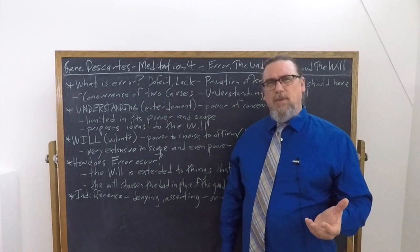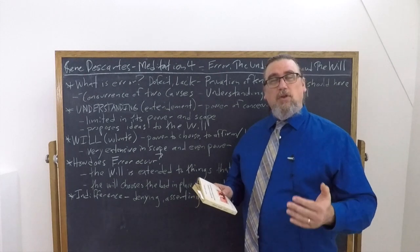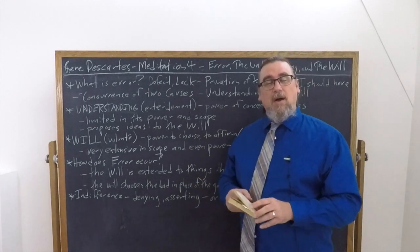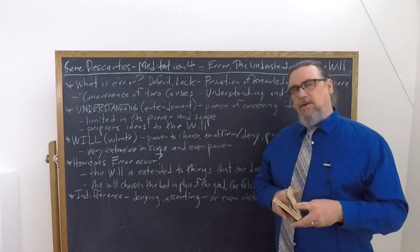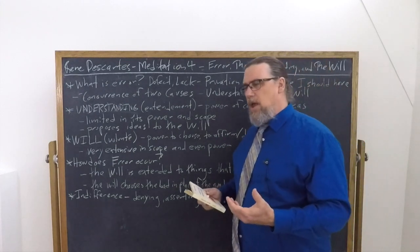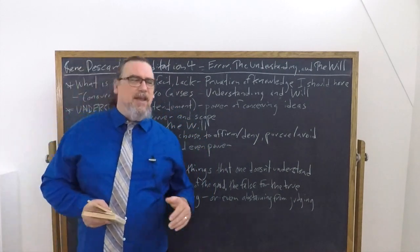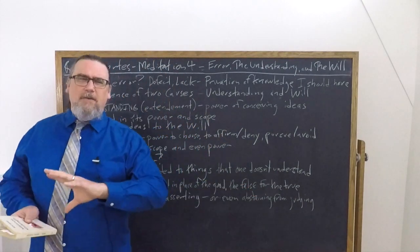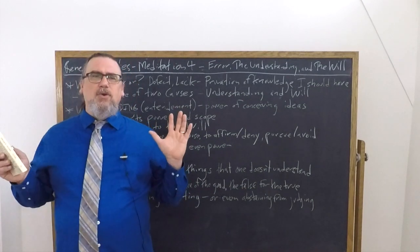So this actually suggests to us what it is that we might do with our wills in order to avoid falling into error. We should probably restrict ourselves to limits of our understanding instead of affirming things that we don't actually have clear and distinct ideas about, or at least some probability, some good reason to think that that's the case, or perhaps we could derive from previous principles.